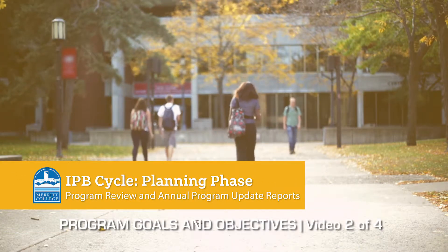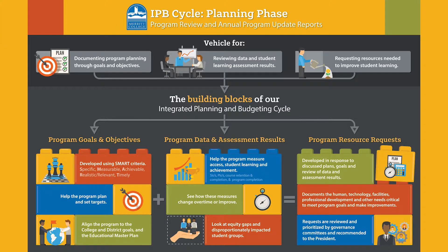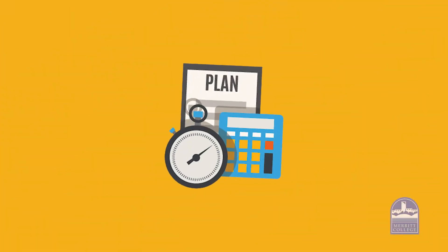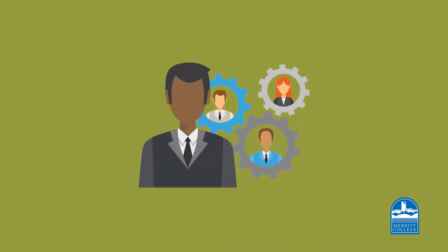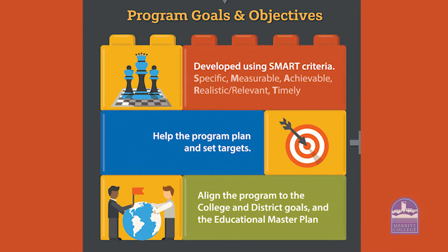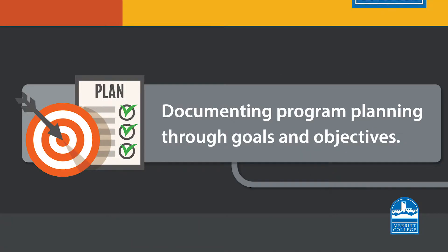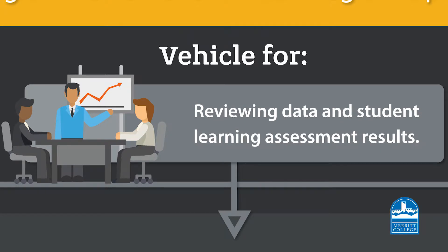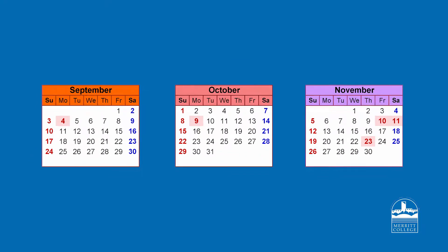At Merritt College, programs and departments complete a comprehensive program review every three years. In the years in between, they will complete annual program updates. In order to complete these reports, the college requests information from each program and department. The primary components of the reports are program goals and objectives, and evaluation of program data and learning outcome assessments. This review allows programs and departments to build resource requests for program improvement. These reports are completed during the fall semester.